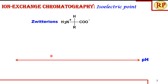If the ions of interest are only positively charged, I choose a cation exchanger to separate them. If they are only negatively charged, I use an anion exchanger. However, in the case of zwitterions — which carry both positive and negative charges, such as amino acids — the type of ion exchanger and the pH of the buffer solution both matter significantly.